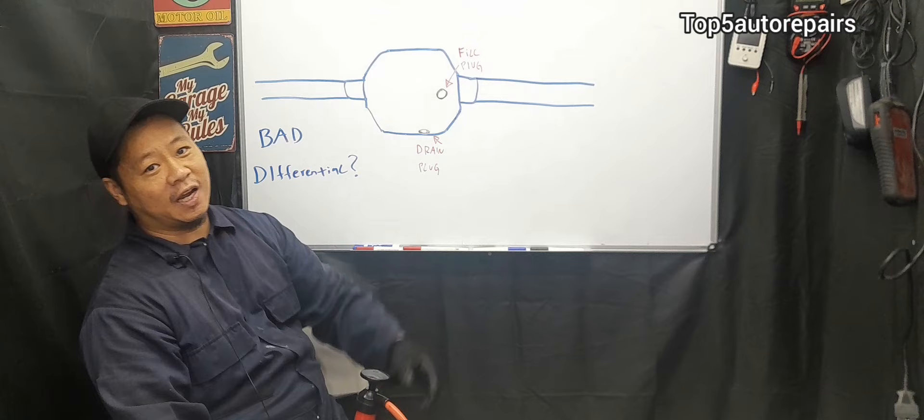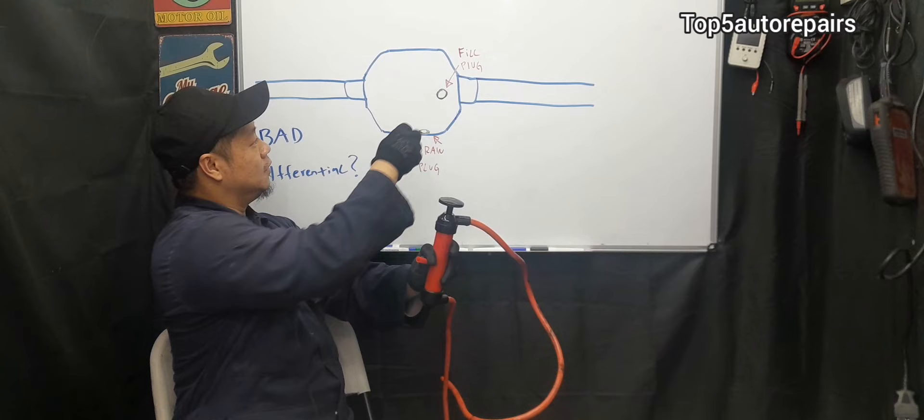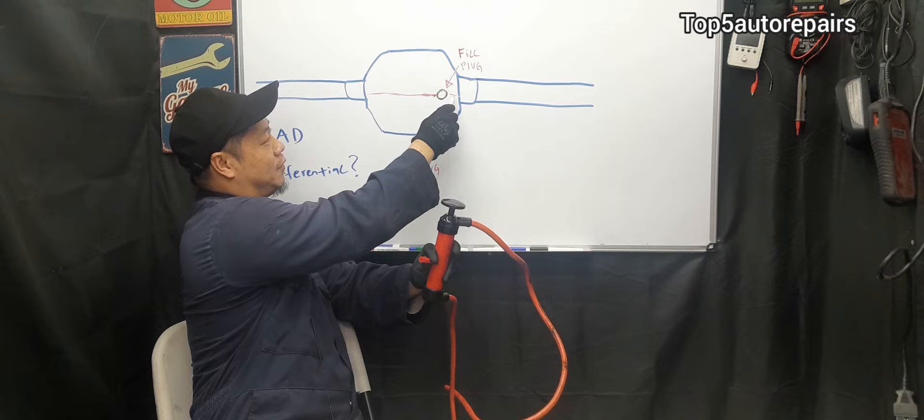And once you are done, all you need is a transfer pump and all you got to do is just pump the gear oil back into the fill plug. You are going to keep pumping it until you see the oil start to leak out over here. So basically, it is going to be around that level right there.